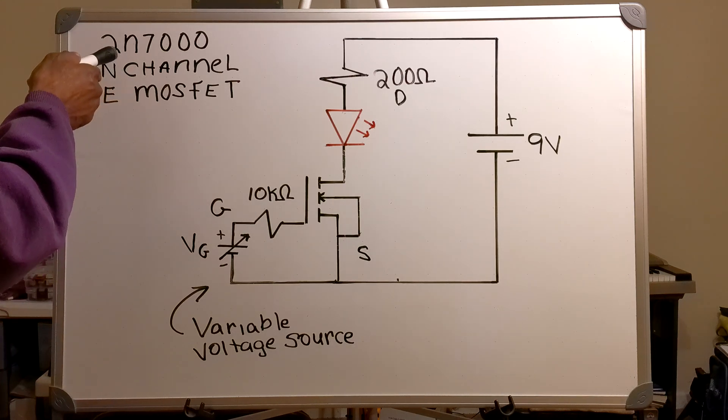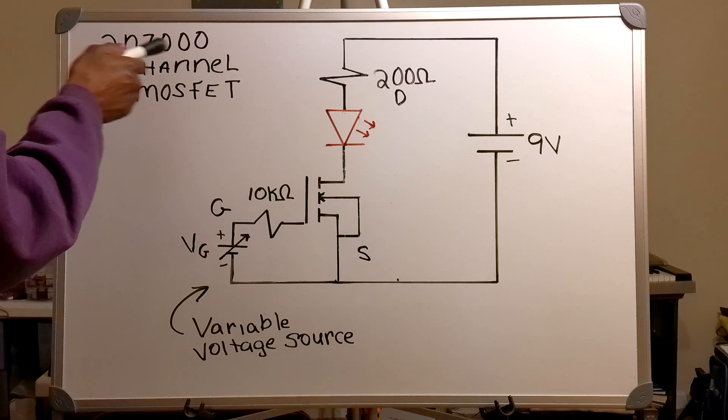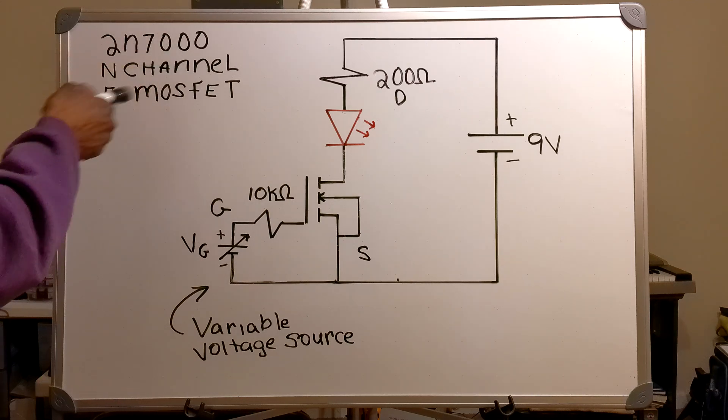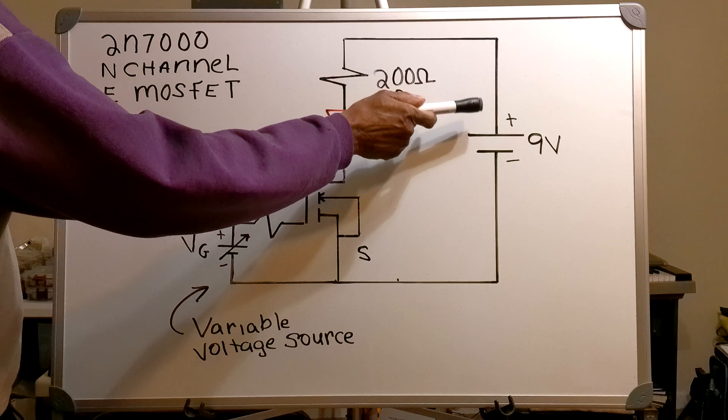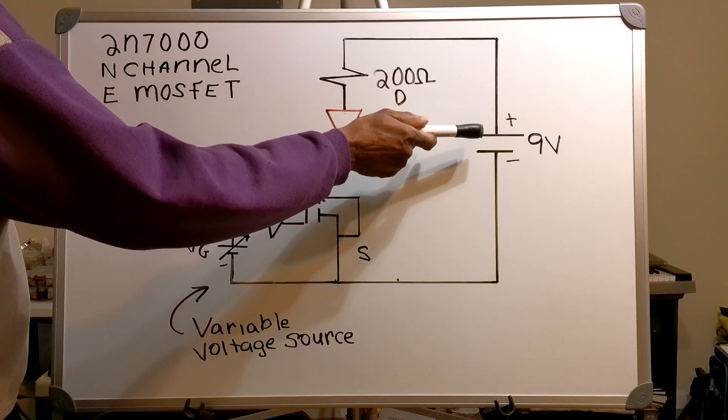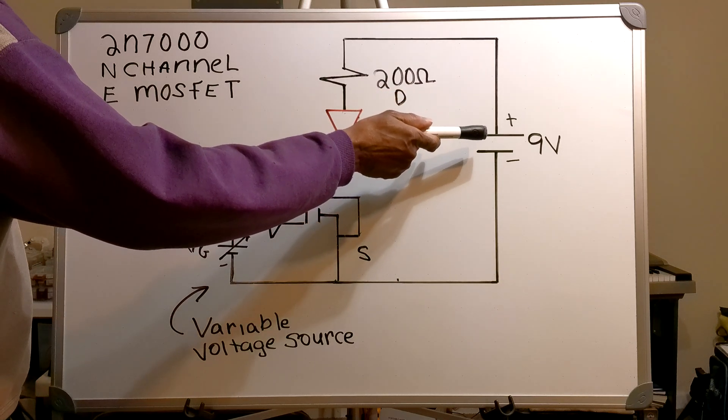In this video I have the 2N7000 N-channel E MOSFET. Across the front of the transistor I've got a 9 volt source.